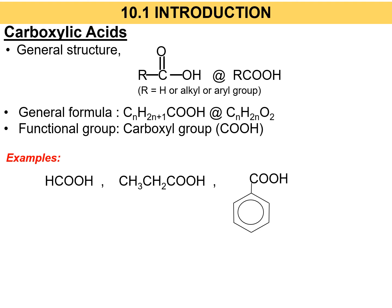So if you see an organic compound that has the functional group C double bond O-OH, or in short COOH, that means that organic compound is a carboxylic acid. The R group can be any alkyl group or any aryl group, and the general formula is C_nH_2n+1COOH or C_nH_2nO_2.